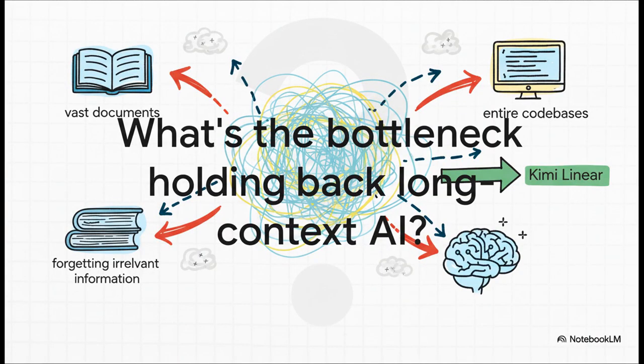So what's been holding us back this whole time? Why can't an AI just process a whole novel or a massive code base in one go? The reality is there's been this huge bottleneck, a fundamental problem of memory and just skyrocketing computational costs.